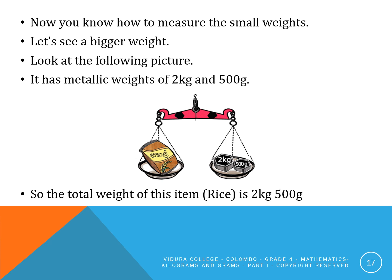Now you know how to measure small weights. Let's see a bigger weight. Look at the following picture. It has metallic weights of 2 kilograms and 500 grams. So the total weight of this item is 2 kilograms and 500 grams.